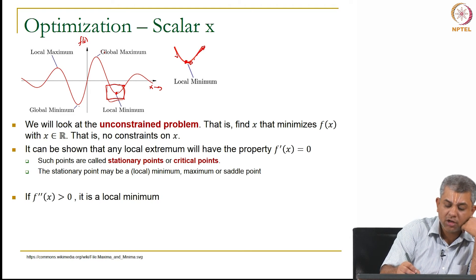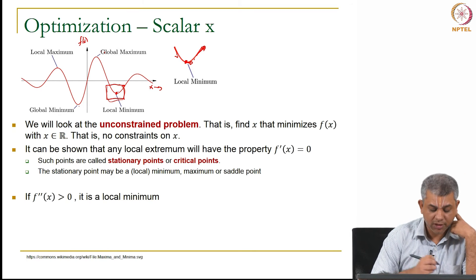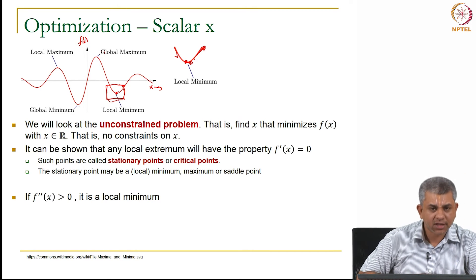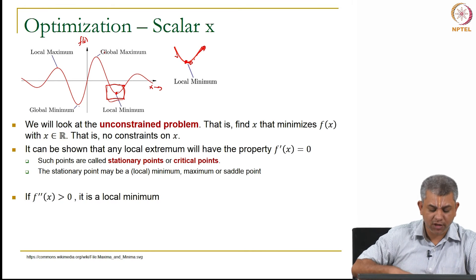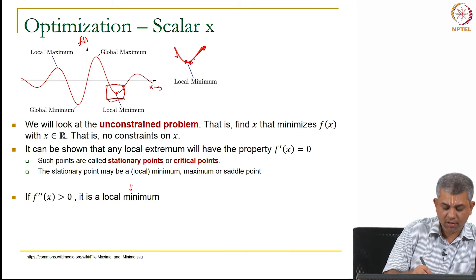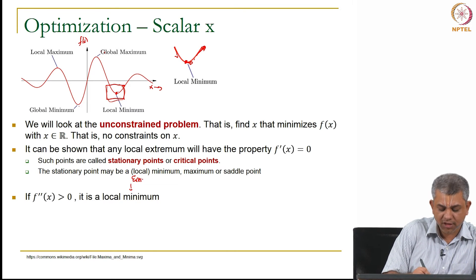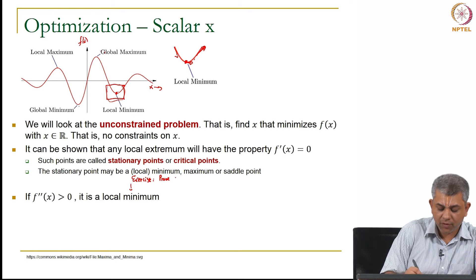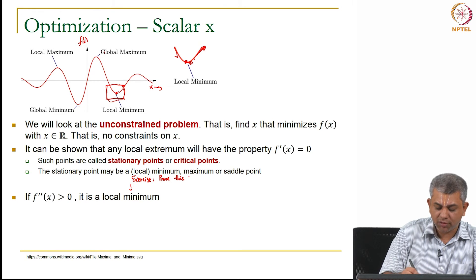So here the slope is 0, here the slope is positive. So that is why del squared f del x squared is a local minimum. As an exercise, you can try and prove this. This is an optional exercise. For those who are interested, you can try and prove this using the Taylor series.